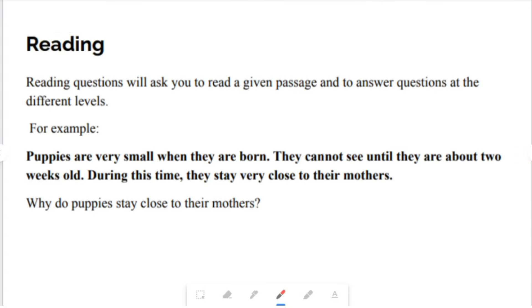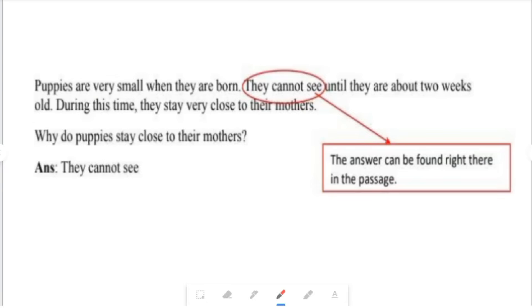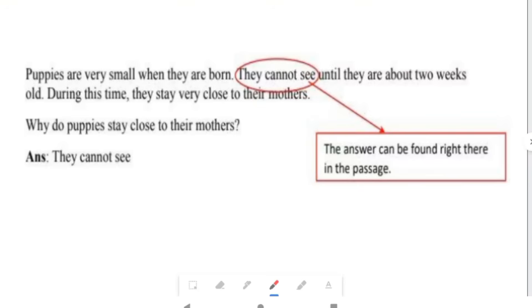Reading. Reading questions will ask you to read a given passage and to answer questions at different levels. For example, puppies are very small when they are born. They cannot see until they are about two weeks old. During this time, they stay very close to their mothers. The question is, why do puppies stay close to their mothers? Puppies are very small when they are born. So, the answers would be, they cannot see. The answer can be found as you can see right here on the page. Not all reading type questions, you can find answers directly from the passage. You may have to infer or use context clues to find your answers.